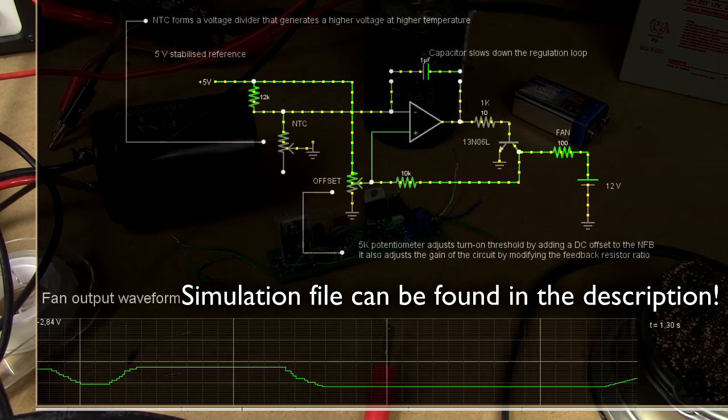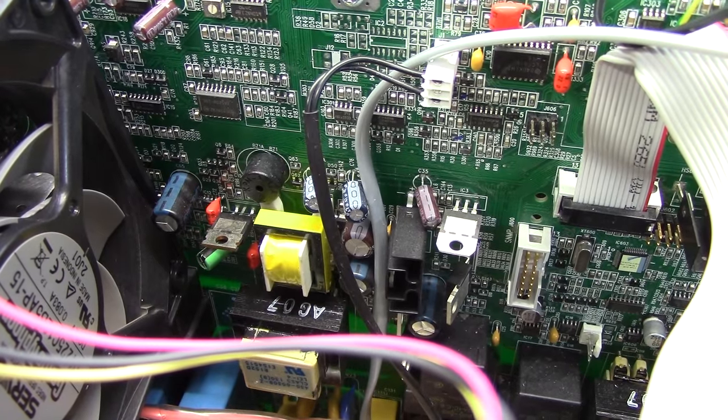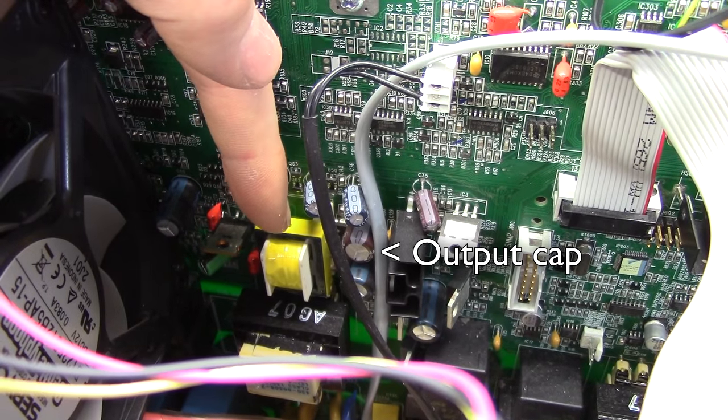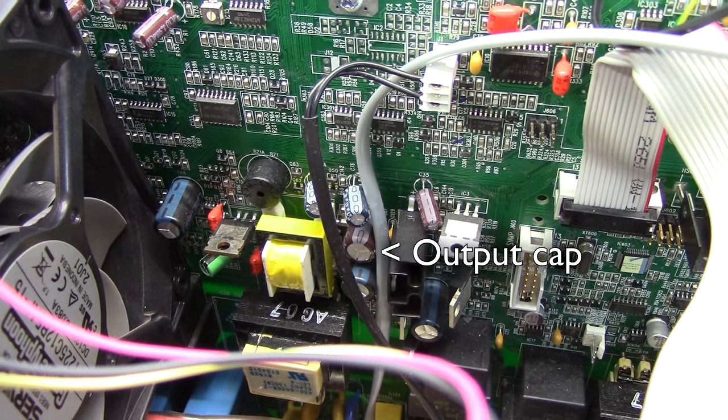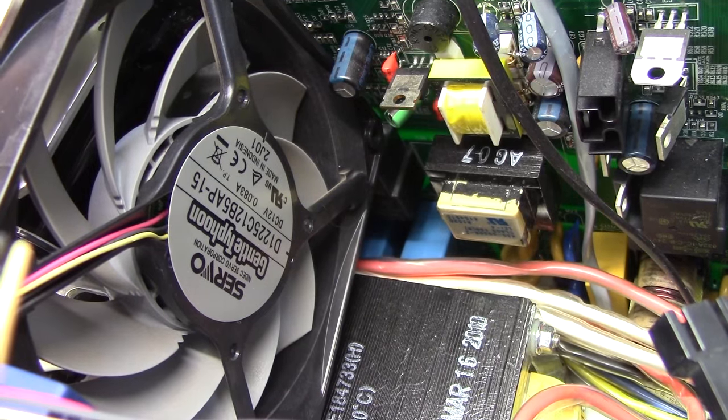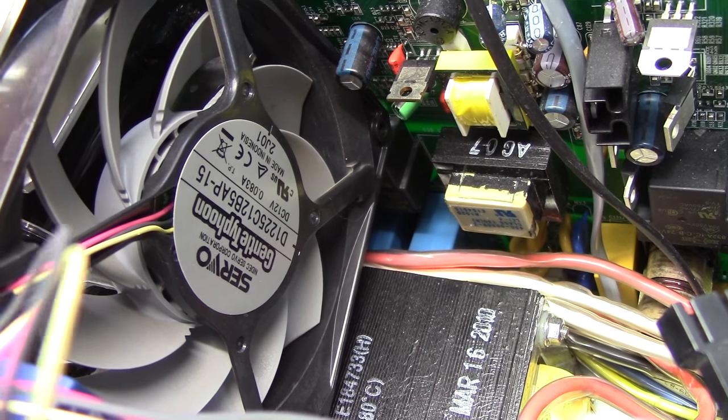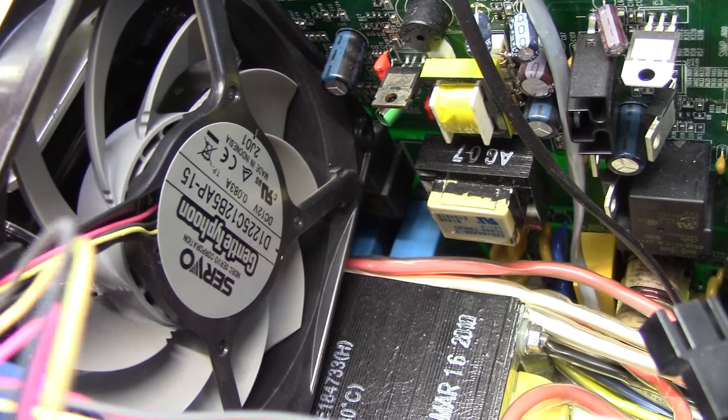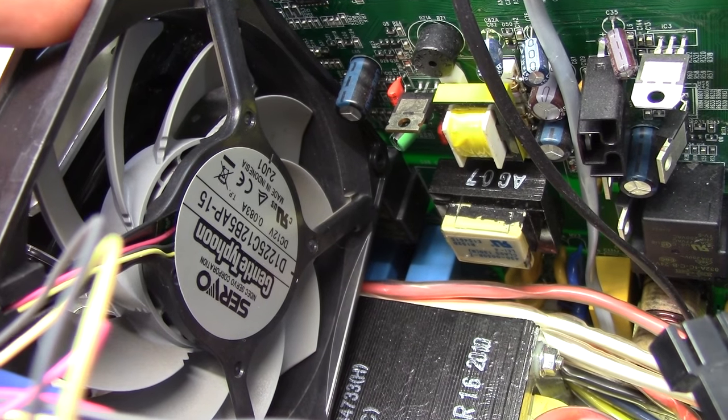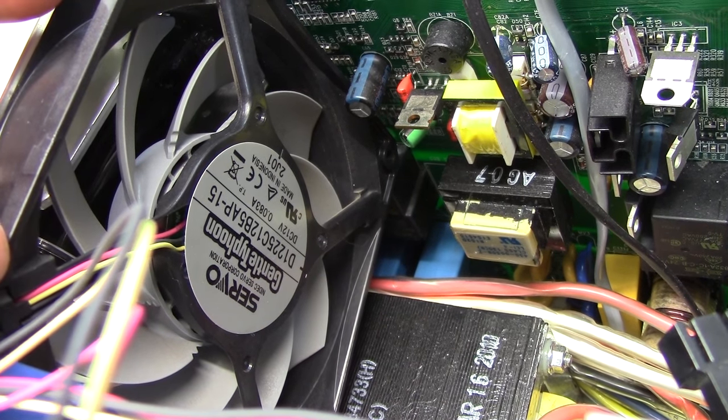This enables the fans to basically turn off at low temperature and spin up rather quickly when the load on the unit changes, for instance, it goes into battery powered mode after being on grid. I'm planning to run this off the internal 12V rail of the UPS, which should be this little switch mode power supply in here.